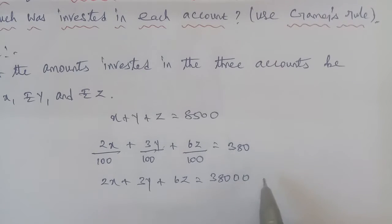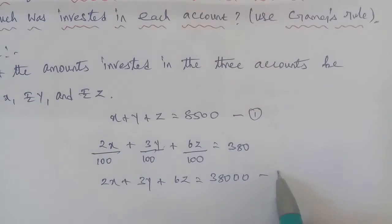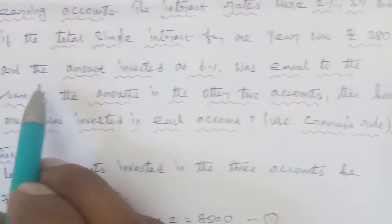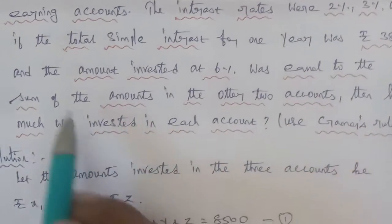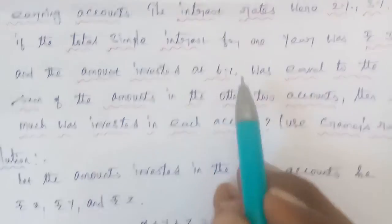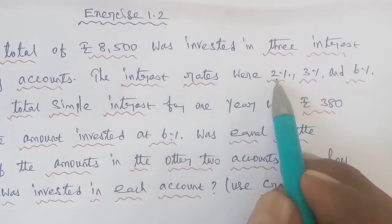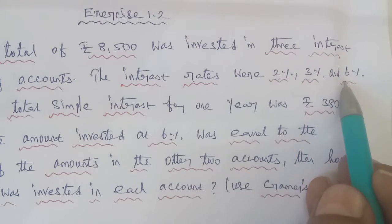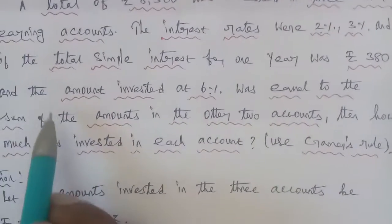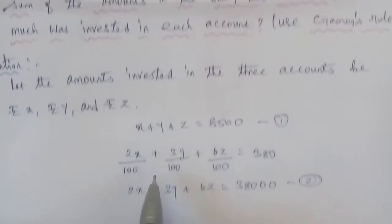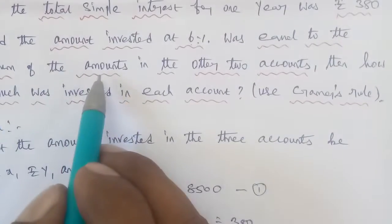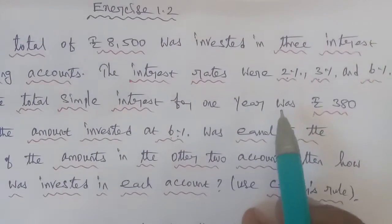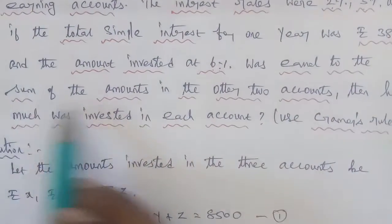The amount invested at 6% was equal to the sum of the amounts in the other two accounts. The 6% account is the third account, which is z. The other two accounts are x and y. So Equation 3 is: z equals x plus y, which gives us minus x minus y plus z equals 0.